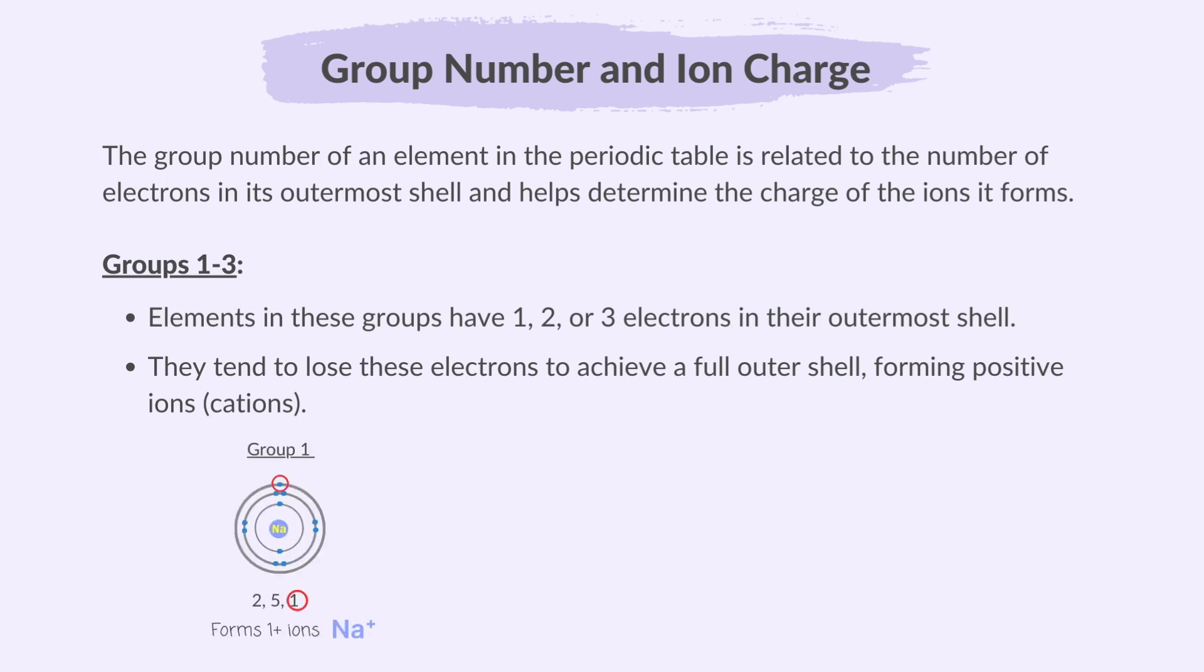Group 1 elements have 1 electron in their outer shell and forms 1 plus ions, e.g. Na+. Group 2 elements have 2 electrons in their outer shell and forms 2 plus ions, e.g. Ca2+. And group 3 elements have 3 electrons in their outer shell and forms 3 plus ions, e.g. Al3+.